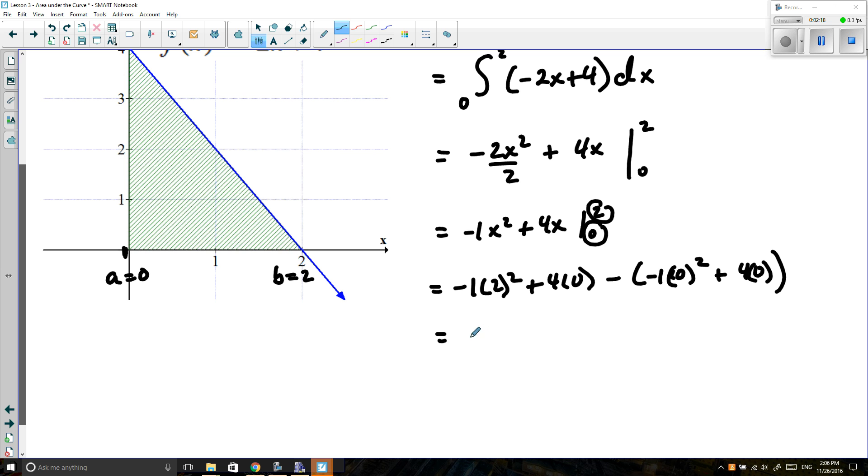So negative 1 times 2 squared is going to give us negative 4 plus 4 times 2, and that should be 8. And then minus, when I look at this expression, negative 1 times 0 squared will just give us 0, and then 4 times 0 will just give us 0. So we just end up getting 0 in the end. So my answer is negative 4 plus 8, which is going to end up giving us positive 4. So that represents the area underneath this curve.